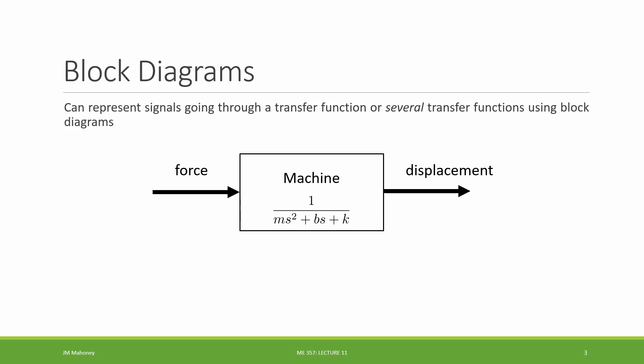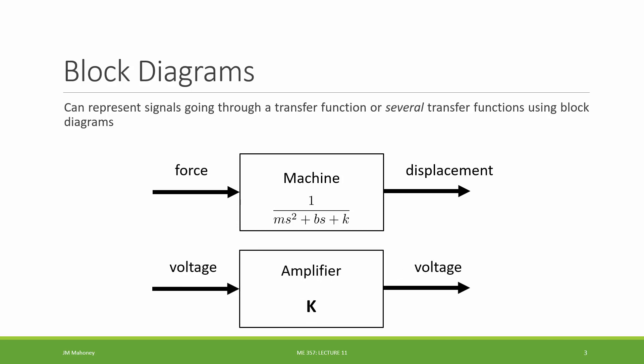A transfer function takes some input signal, performs some operation on it, and transfers it into an output signal. In the case of a mechanical system, the input is a force and it changes into a displacement. In an electrical system, we might have a voltage come in as input, go through an amplifier, and output another voltage. This graphical representation shows the flow of a signal going through transfer functions and being transformed.